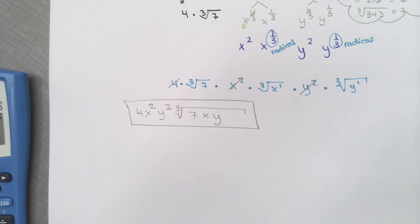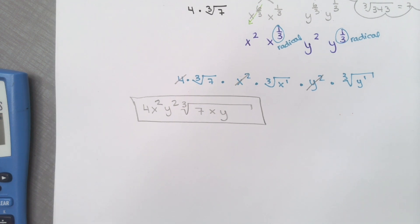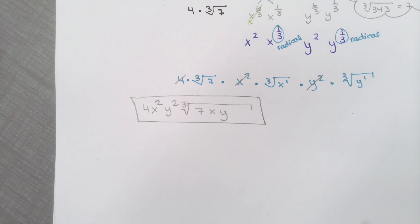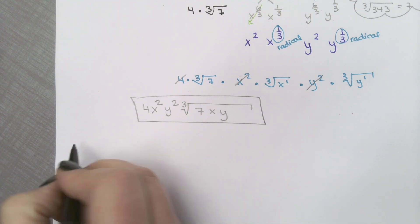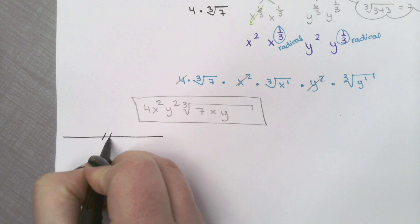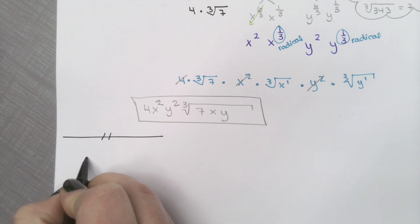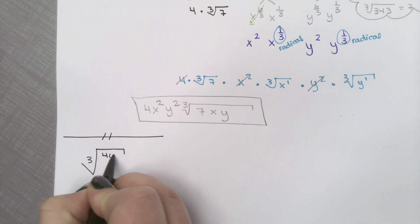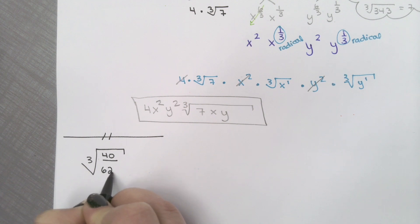Does anyone have questions on this one? As always, beautiful people, as we're working through these, try to work ahead of me and see if we get the same answer. That way if I make a mistake, you can call me out on that. Let's do the next simplify. Next simplify is, once again, a cube root of 40 over 625.